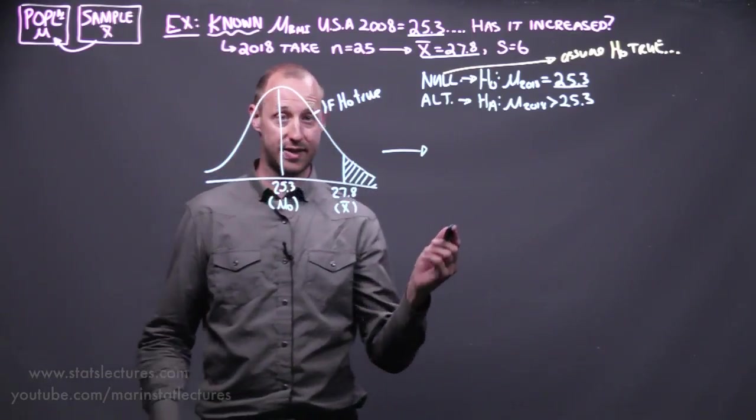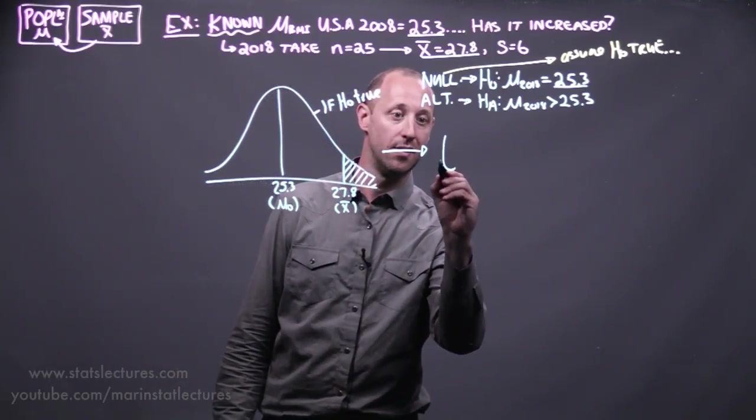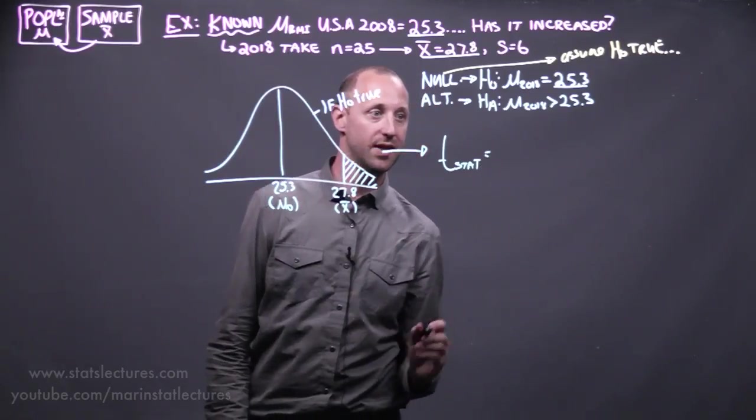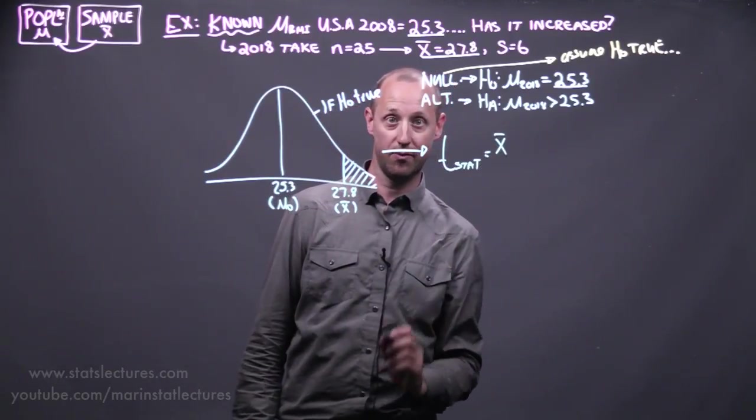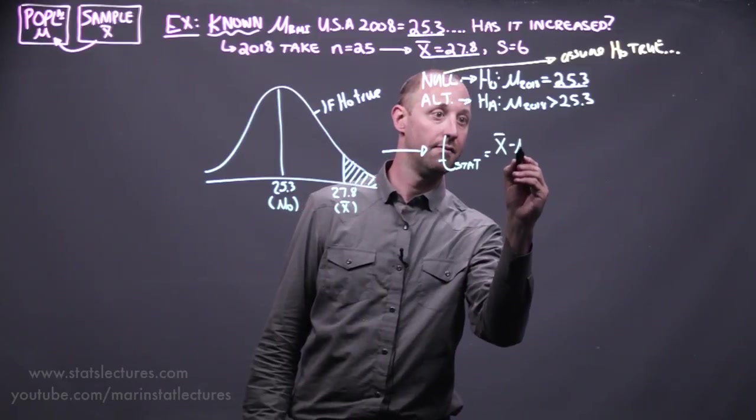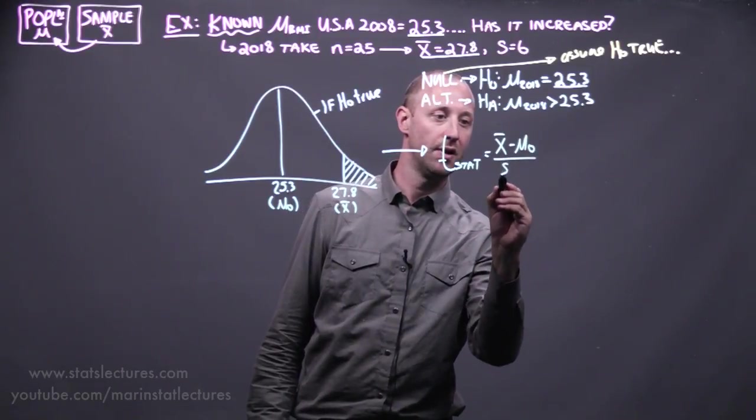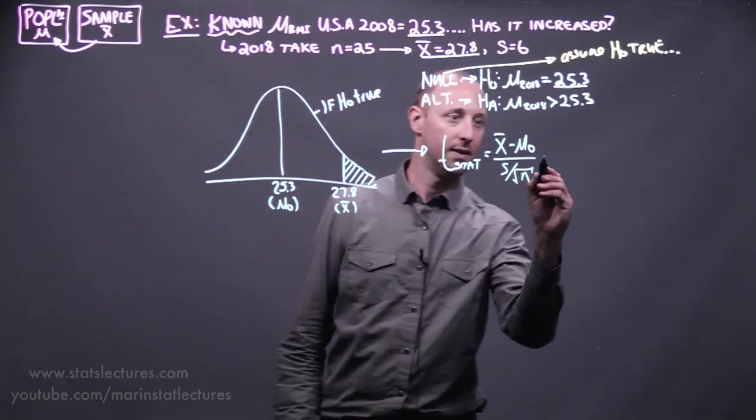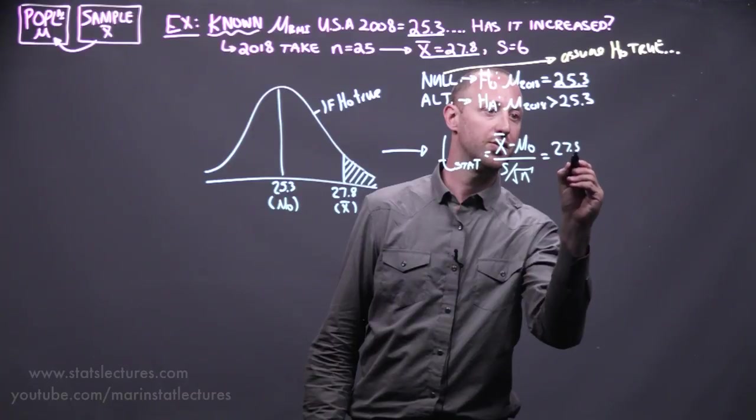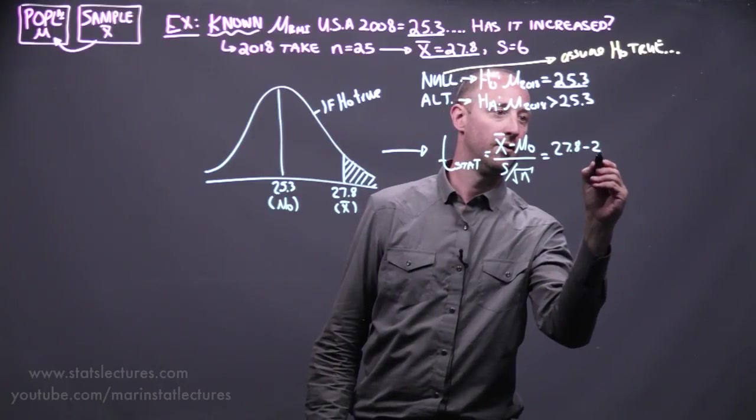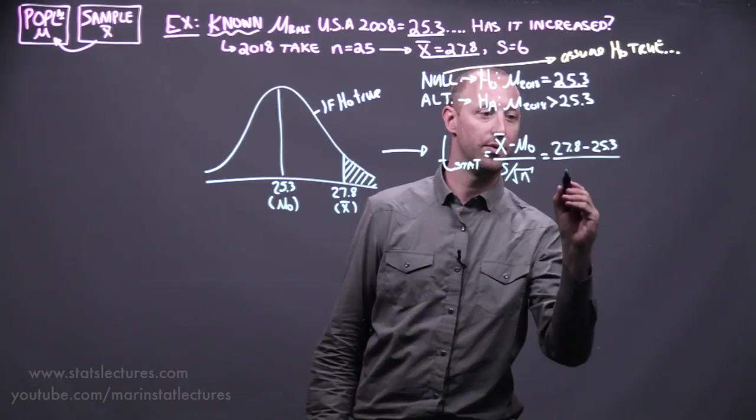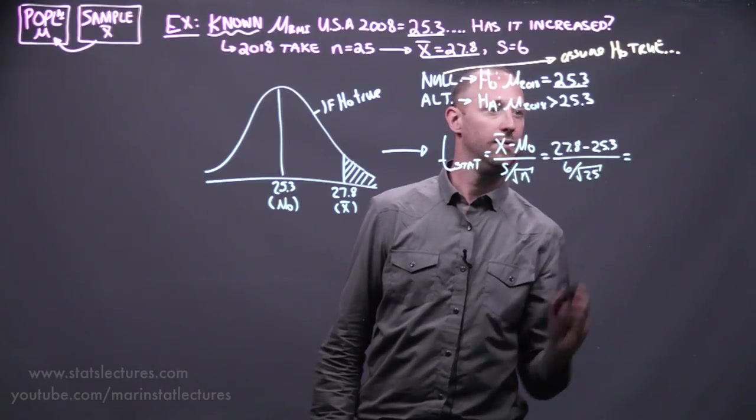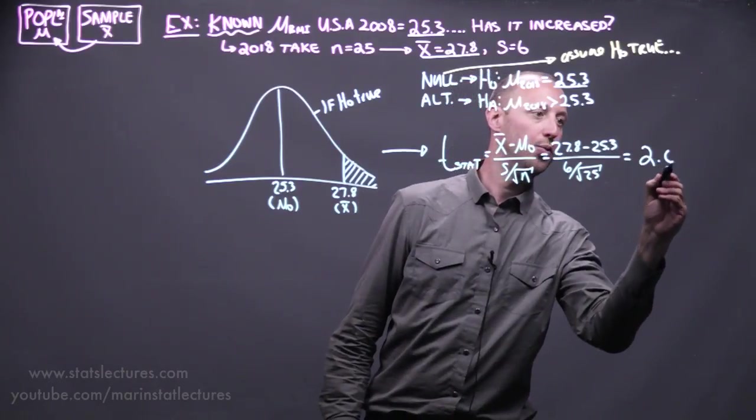We can think about standardizing this as we did before, we're calculating our test statistic, and this looks at how far is the estimate we got in a sample from the hypothesized value in terms of the standard error of the estimate. In our example, how far is the 27.8 from the hypothesized value of 25.3 in terms of a standard error? This is going to come out to be 2.08.